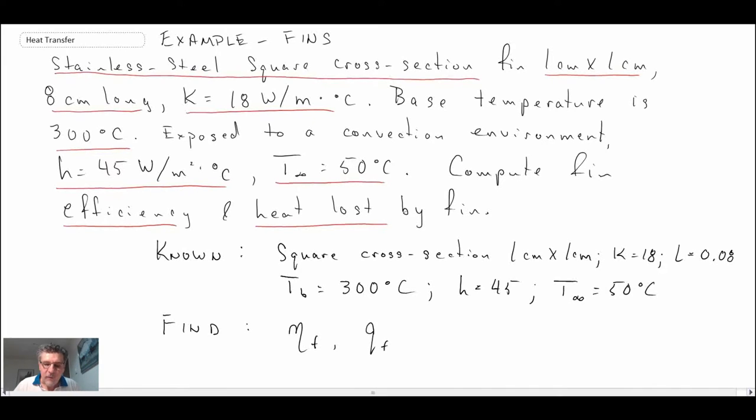Okay, so we're after the fin efficiency as well as the heat being removed by the fins. And so the analysis for this, what we're going to do, we're going to use our case three insulated tip solution, but we're going to correct the length. And so we're going to extend the length a little bit in order to approximate the case two, which was the more accurate solution. And so we're going to do that with convection from the free tip.